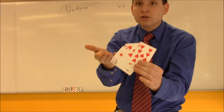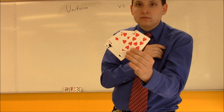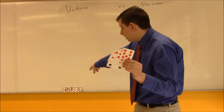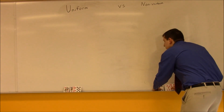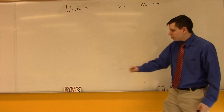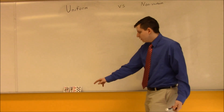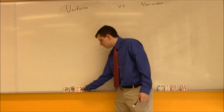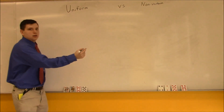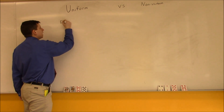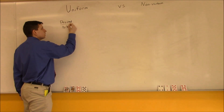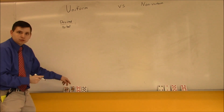Looking here, I see that there are three red cards and only one black card, so the probability of choosing the black card is lower than choosing red. Looking at the uniform probability on the left: the probability of choosing a black card — there are two black cards out of four cards total. Using the formula of desired outcome over the total number of outcomes, I know that my numerator is two because there are two black cards.